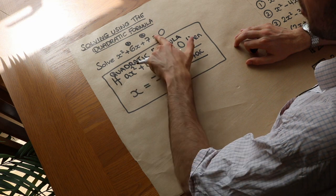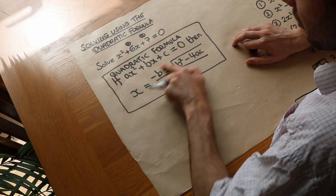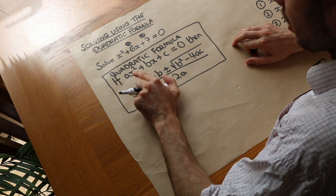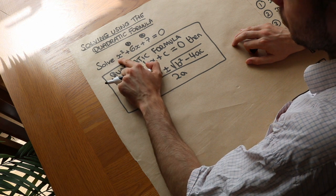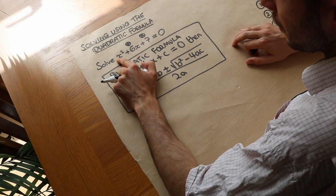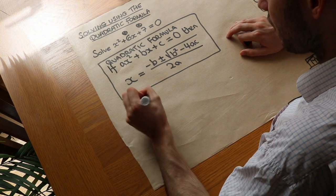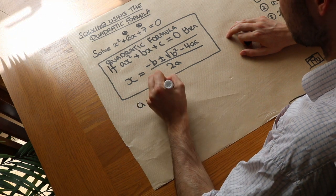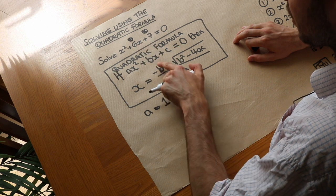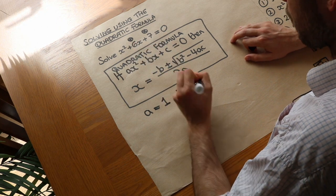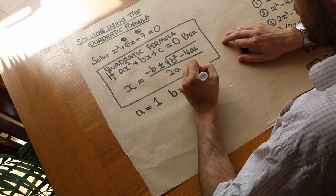So let's use this formula to solve this particular equation. We need the a, b, and c to substitute into the expression. a is the number in front of the x squared — the coefficient of x squared. There's effectively 1x squared, so a is 1. b is the number in front of the x, in this case it's 6. And c is whatever the constant term is, the number on its own, so c is 7.